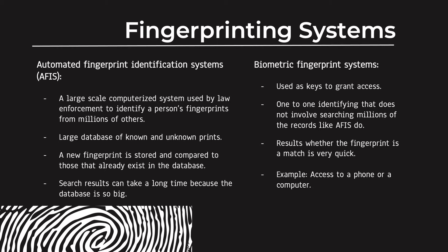The large database has both known and unknown prints. A new fingerprint is compared on the computer to those that already exist in the database. Searches can take a long time because the database is so large. The biometric system, on the other hand, is used to grant access — it's a one-to-one identification that does not involve searching millions of records like AFIS does. Results on whether the fingerprint matches are very quick. Examples include unlocking a phone or computer.